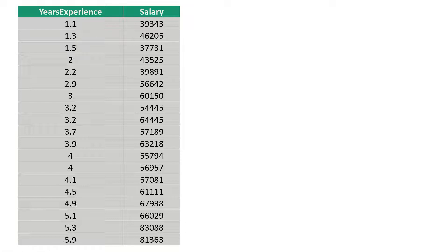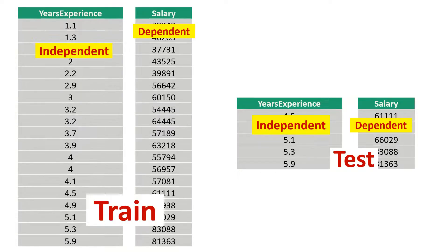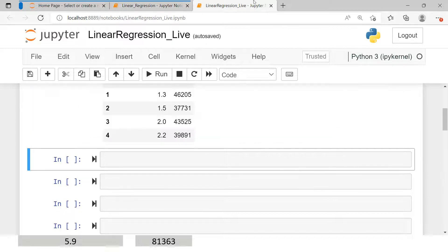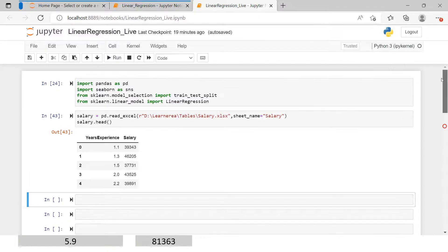To start with model building, first we need to divide the data into two parts: training and testing. Further, we need to divide each of those into two separate parts for independent and dependent variables. So the training dataset is divided into independent and dependent, and the same goes for test. Now let's go ahead and start developing the linear regression model. I'm in Jupyter Notebook — let me just make it look better for you.